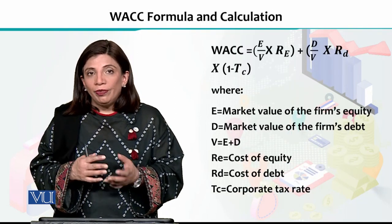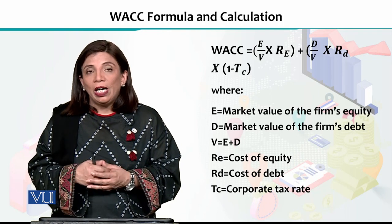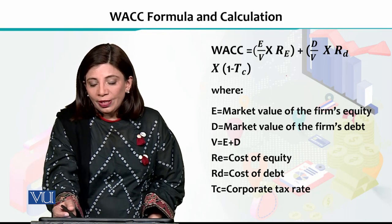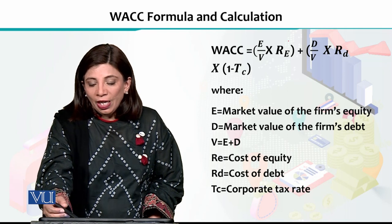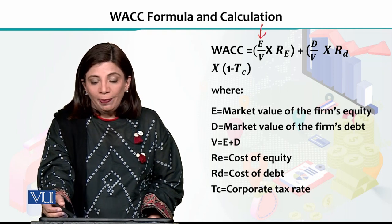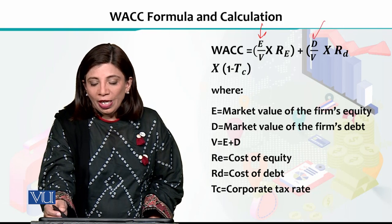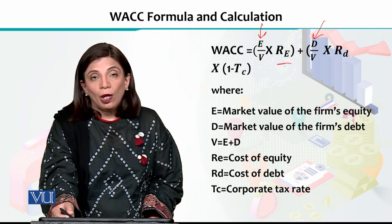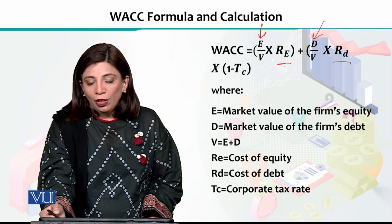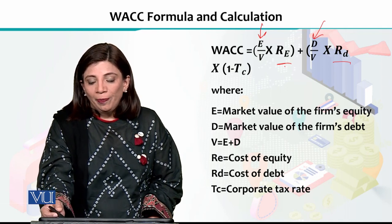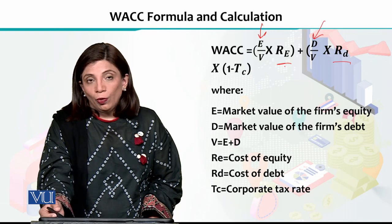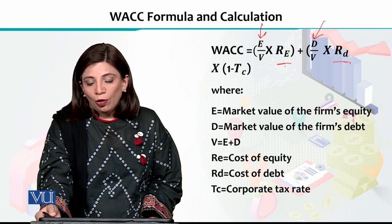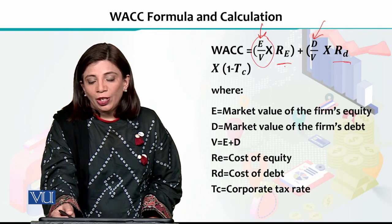If we look at the formula, with the help of an example, we will see how this value can be calculated. In order to calculate the formula, we basically need the market value of the firm's equity, which is represented by E, and the market value of the firm's debt. This is the cost of debt, and this is the cost of equity, which is the total proportion of your total cost. The debt to the overall investment is represented by V. With one ratio you calculate the cost of debt, and with the other ratio you multiply by the cost of equity.